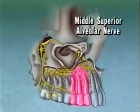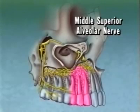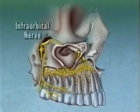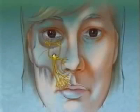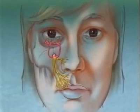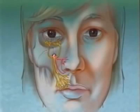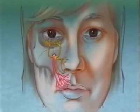If present, the middle superior alveolar nerve supplies sensation to the premolar region and the mesial buccal root of the first molar. The infraorbital nerve emerges from the infraorbital foramen to divide into its terminal branches. The inferior palpebral branches supply the lower eyelid, the external nasal branches provide sensory innervation to the side of the nose, and the superior labial branches pass to the upper lip.